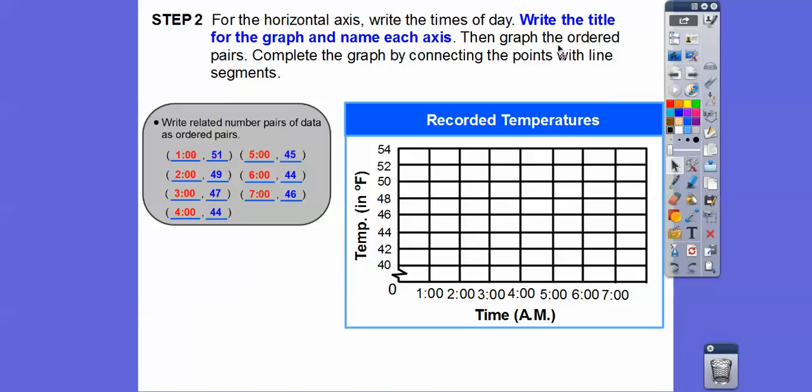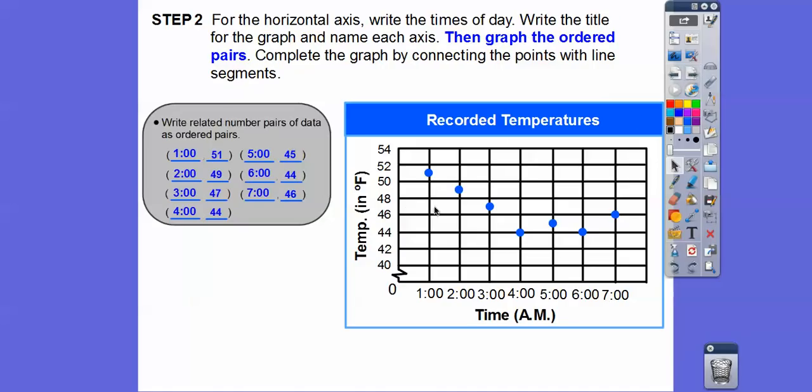All right, and then now let's do this next part. So then graph the ordered pairs. So we're going to graph 1, 51. So here's 1. Here's 40. Here's 42. Here's 50. So here's 52. So 51 is going to be right there. So we'll just graph all of those. So here are all these points graphed right here. Here's 2 o'clock, 49 degrees. So at 2 o'clock, it's 49 degrees. At 3 o'clock, it's 47. So 3 o'clock, go between 46 and 48. So 47 would be right there.